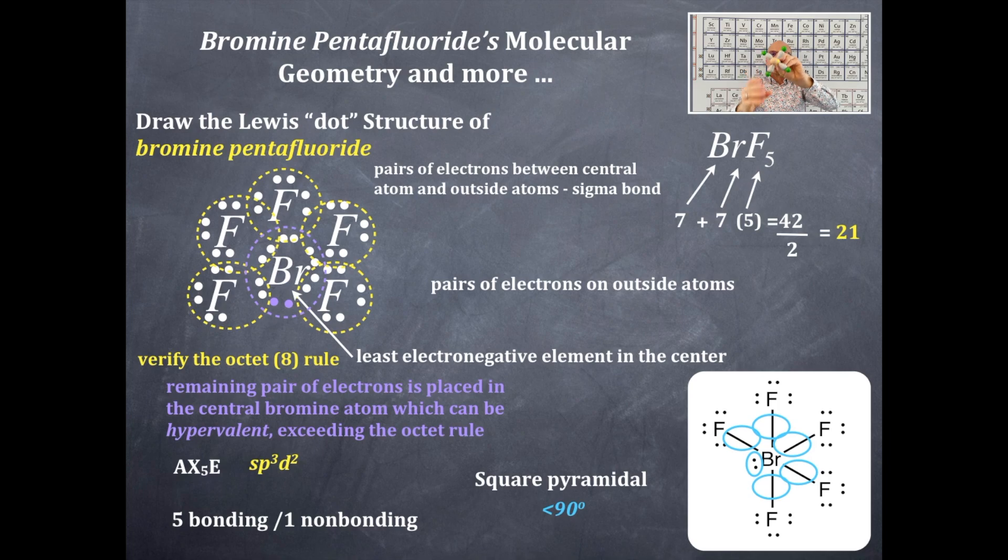Is this symmetrical or asymmetrical? Does this have a polar bond? Most certainly, bromine and fluorine have a difference in electronegativity. There are polar bonds throughout this molecule. That first criteria is satisfied.